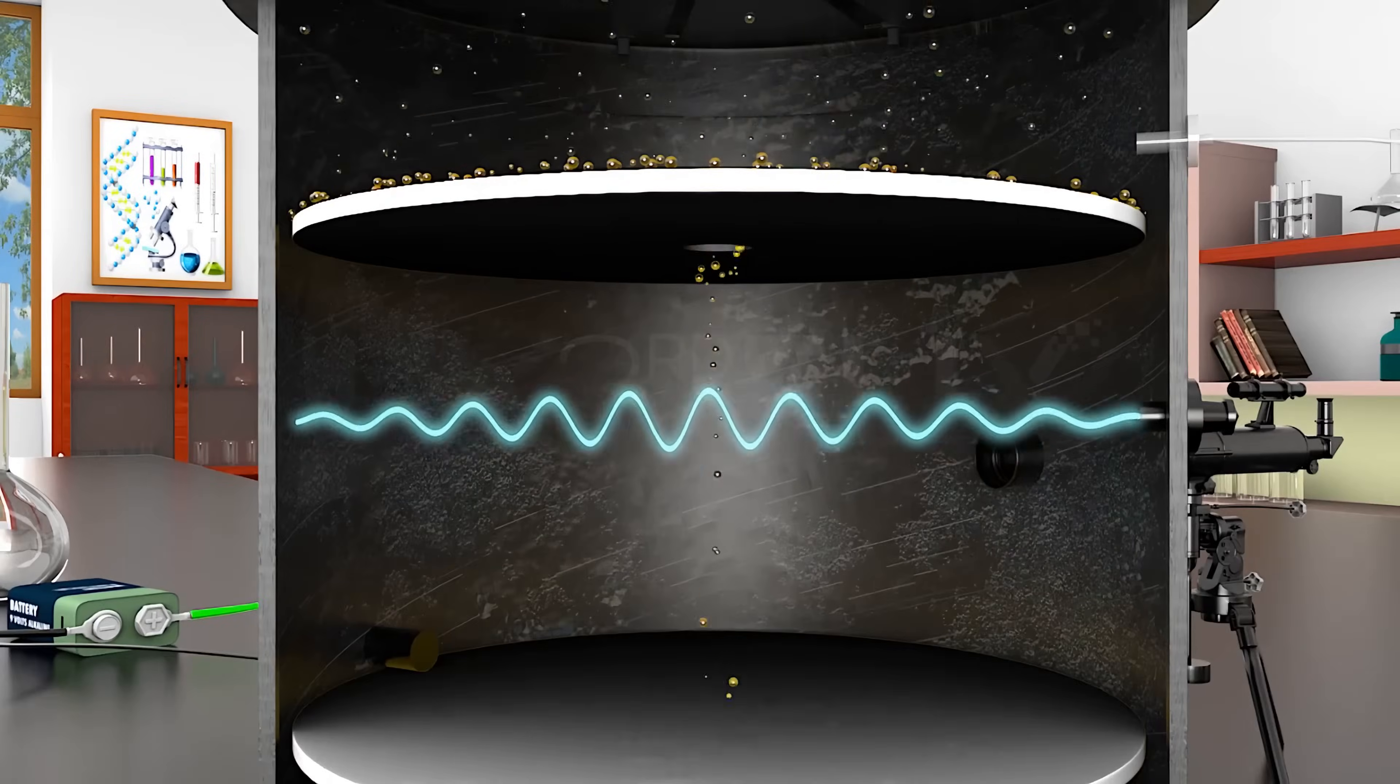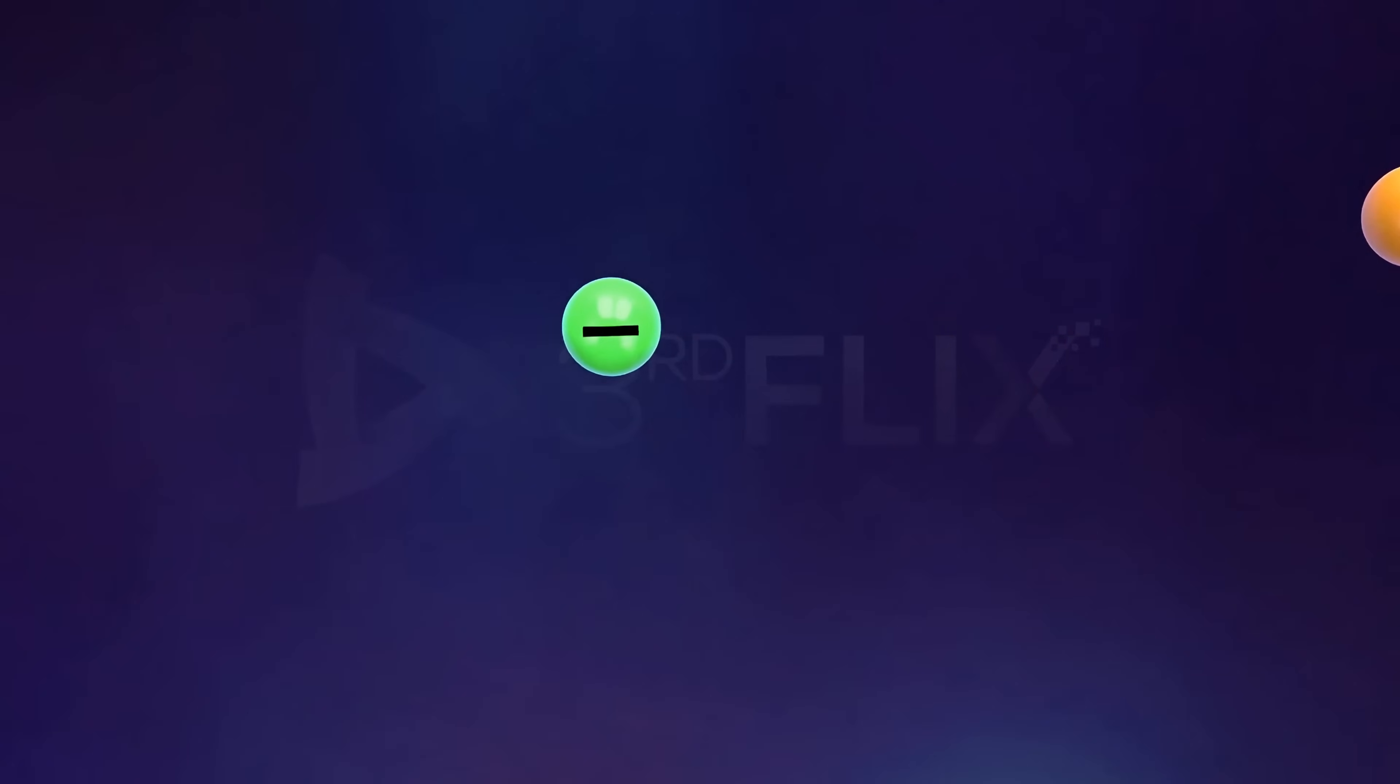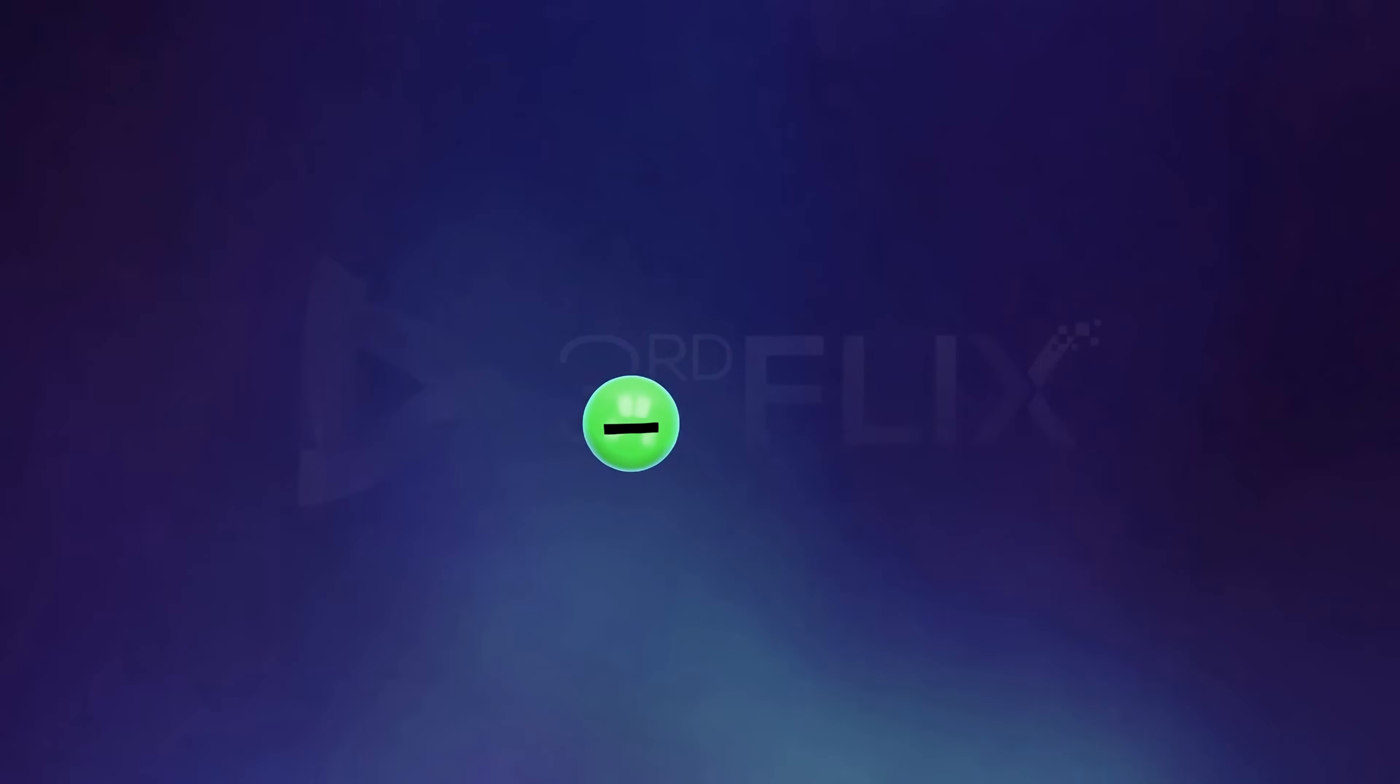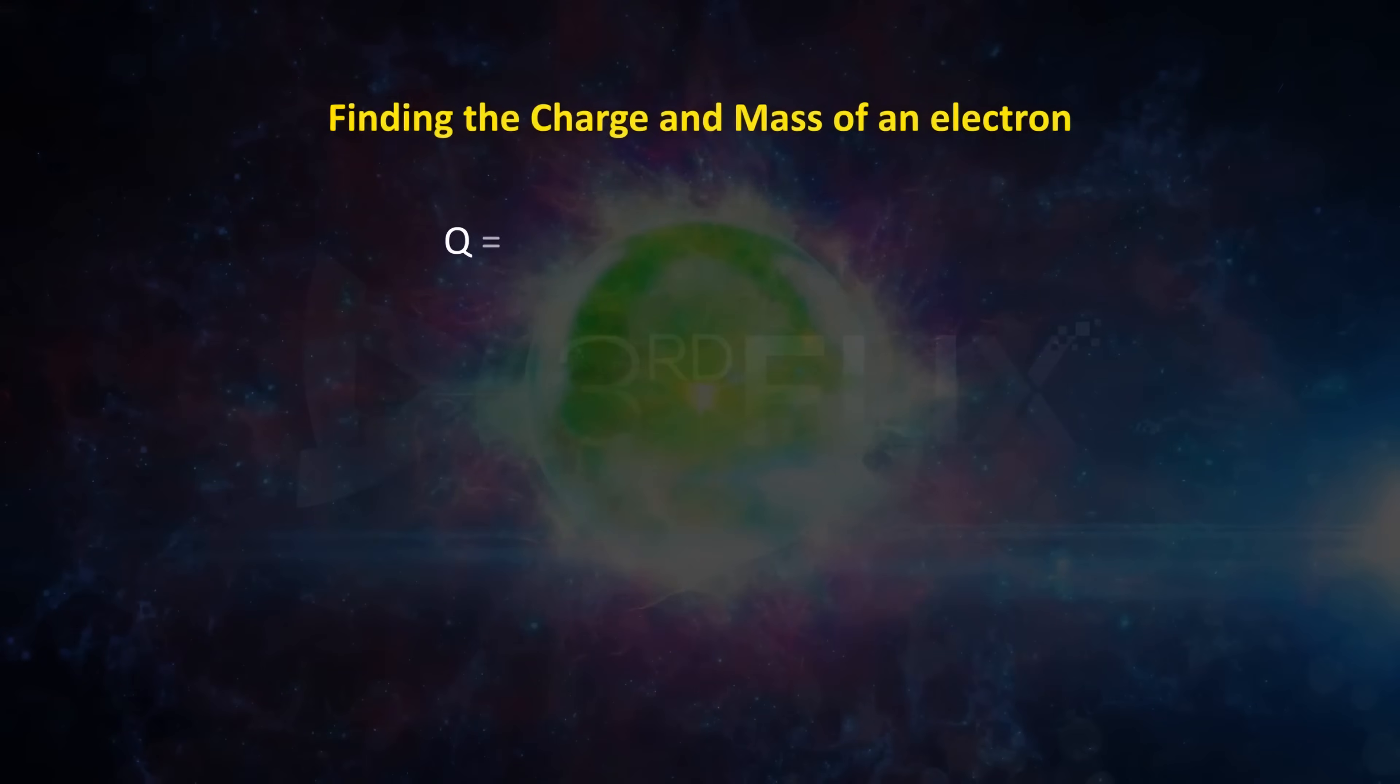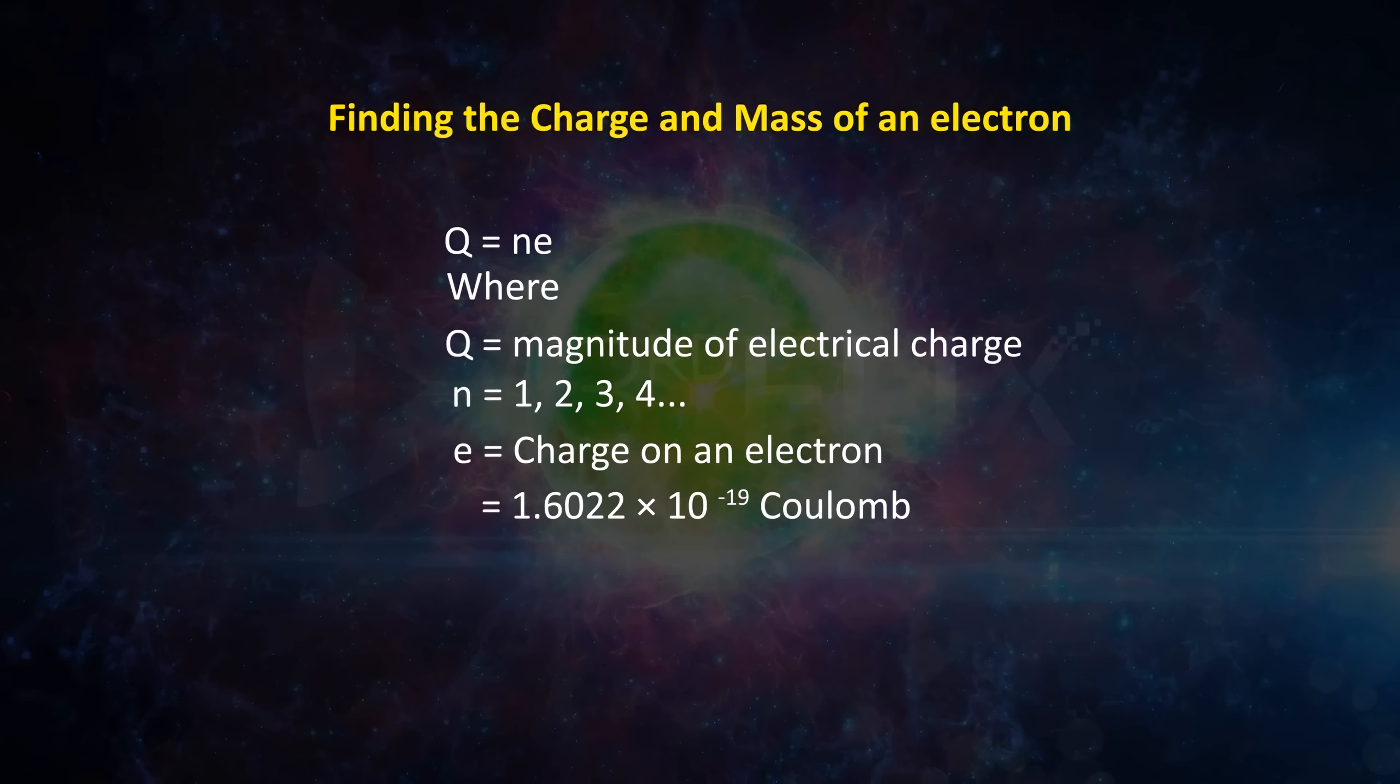Millikan found that the magnitude of charge Q on an oil droplet was always an integral multiple of a minimum electrical charge e. Q equals ne, where Q equals magnitude of electrical charge, n equals 1, 2, 3, 4. Knowing the values of Q and n, Millikan calculated the charge on an electron as 1.6022 times 10 to the power minus 19 coulomb.